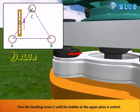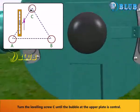Turn the leveling screw C until the bubble at the upper plate is central.